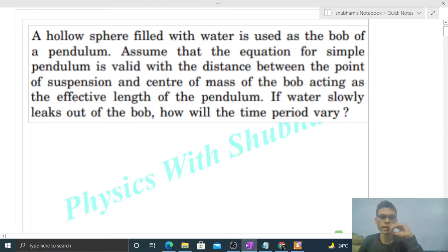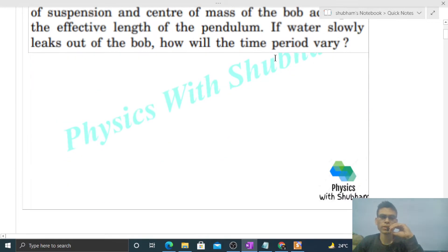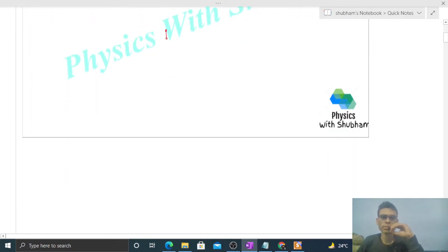If water slowly leaks out of the bob, how will the time period vary? So we have this pendulum and its bob is a hollow sphere filled with water.